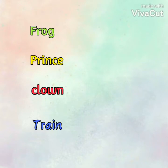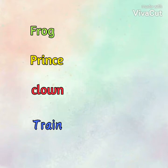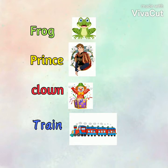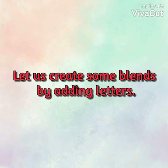Blend them together and they help the word begin. These are known as beginning consonant blends. Hear the words once again: frog, prince, clown, train. We can hear the sound from each consonant in these blends. Let us create some blends by adding letters.